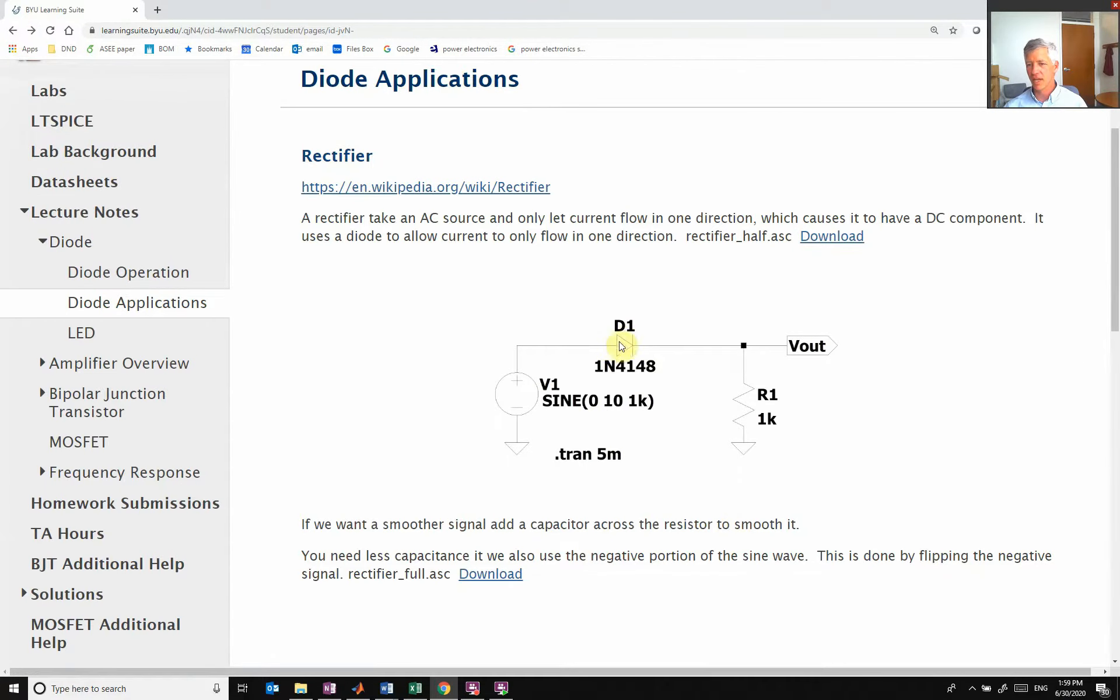So you see we throw in the diode so that when my current is trying to go this direction, it goes straight through. When the current tries to go negative the other direction, then the diode blocks it.